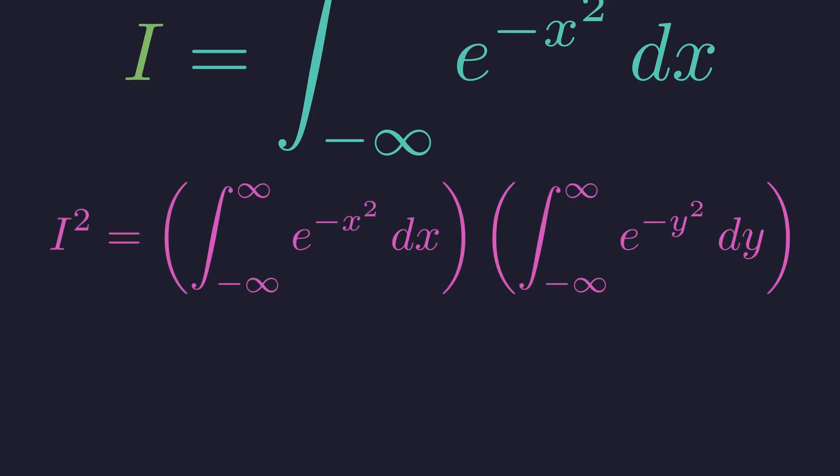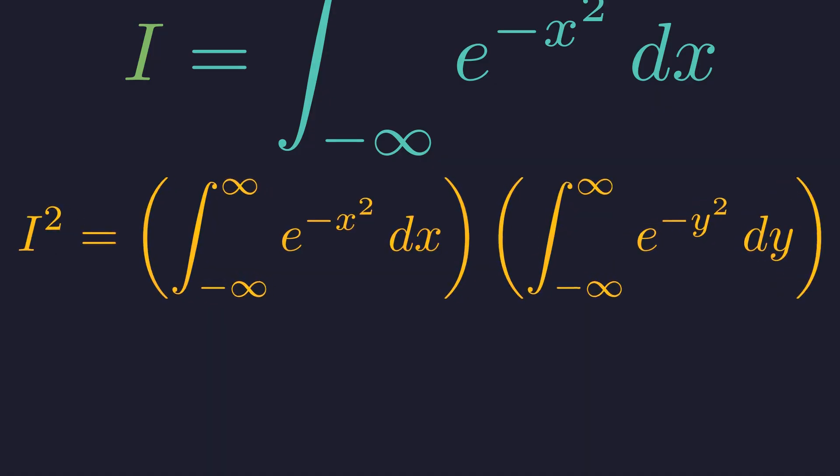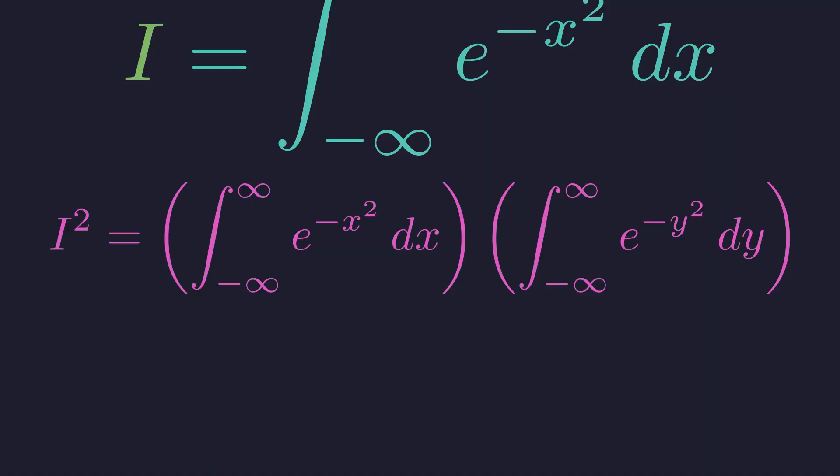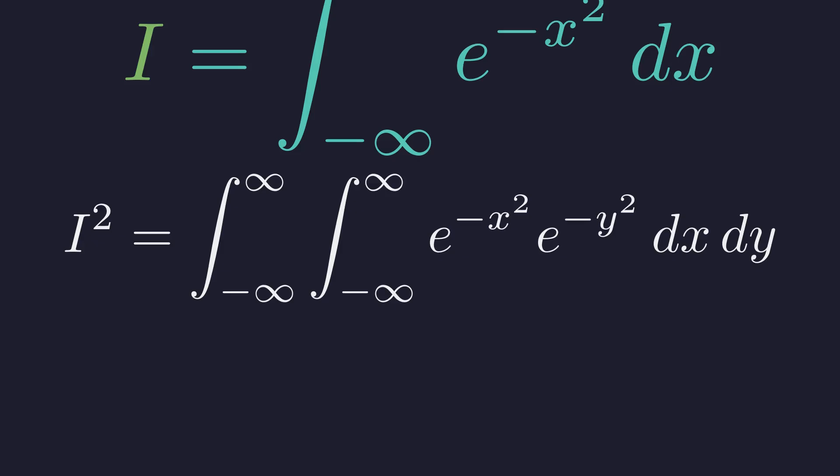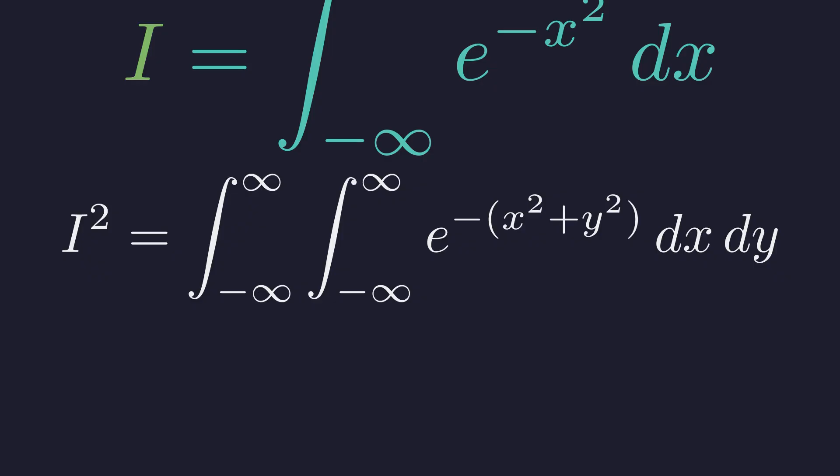So i squared is the product of two integrals. Notice I'm using y for the second integral since x is already taken. These are independent, so we can combine them into a single double integral. This gives us a double integral over the entire xy plane. Now we can combine these exponents. We get e to the power negative x squared plus y squared.